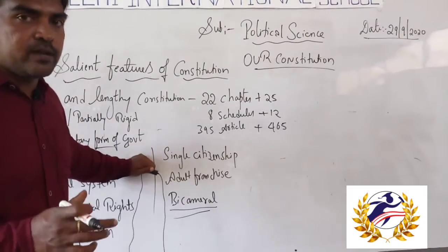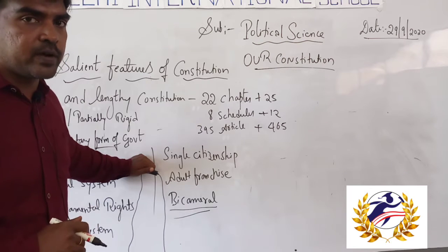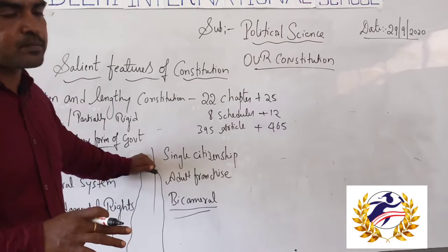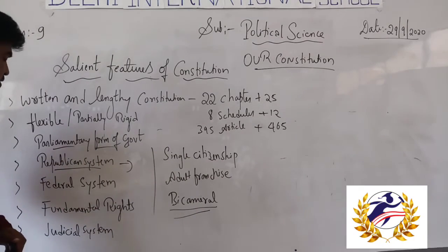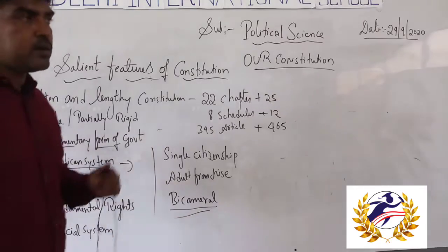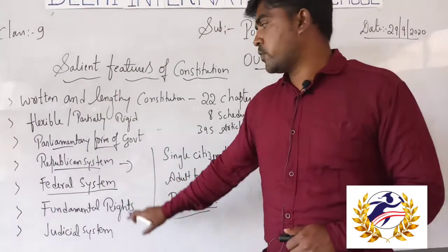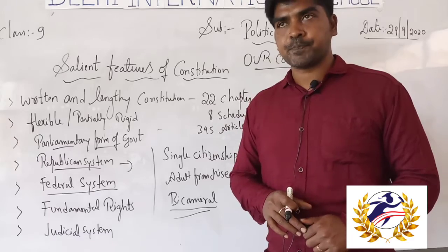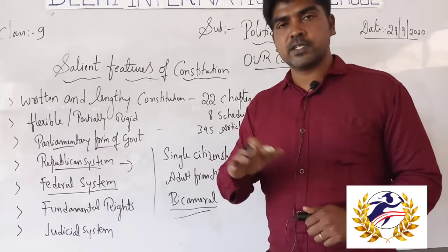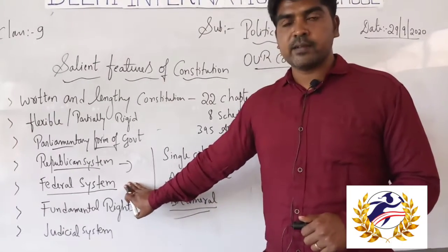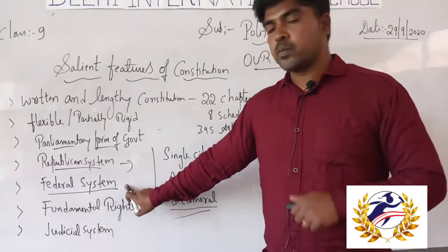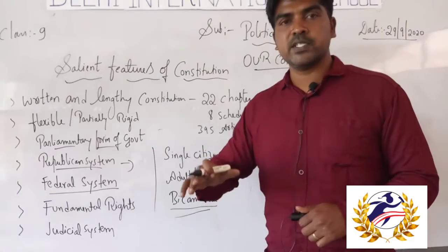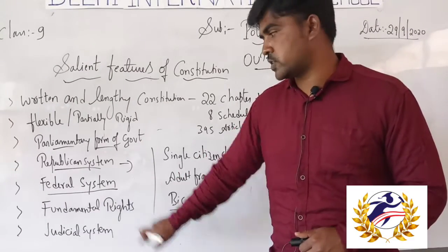The republican system means public power — that is, democracy. India is a democratic country where the most power lies with the public. We also have a federal system, meaning more than one level of government. We have the central government for national administration, state government at the state level, and local self-government at the district, taluk, and village level — including Gram Panchayat, Taluk Panchayat, and Zilla Panchayat.